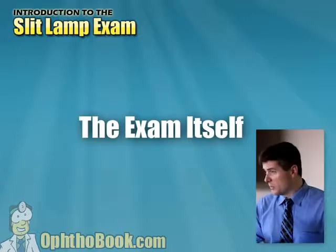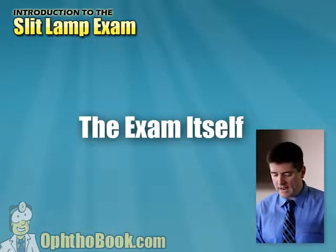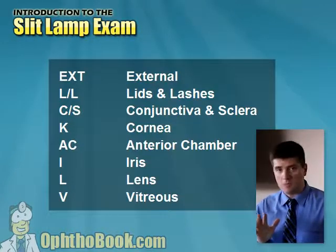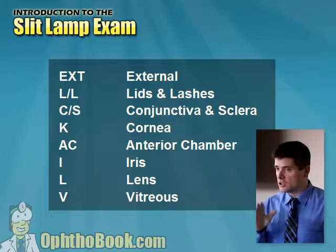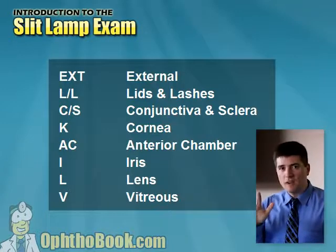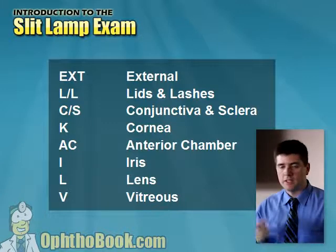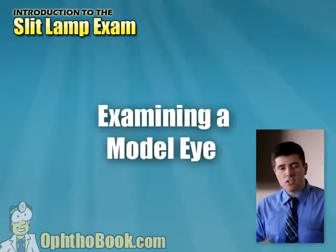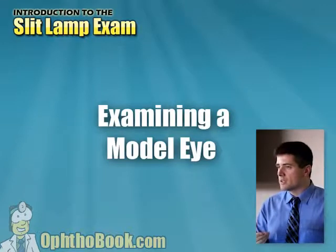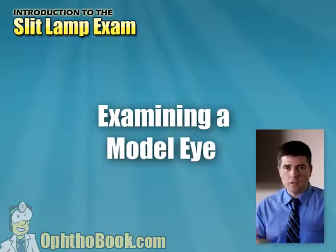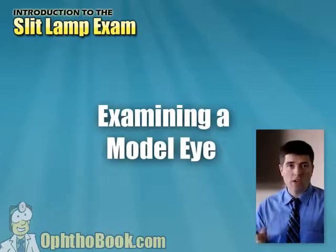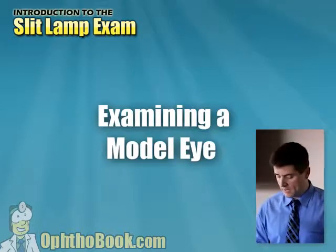Let's move on to the exam itself. There are eight findings that we look at in the front part of the eye — we're not going to talk about retina, just the front. Eight findings — I call these the Ocho, el Ocho, not to be confused with El Niño. Instead of just reading these out, let's take a look at all these findings, first starting with a model, and then we'll move on to some live patients.